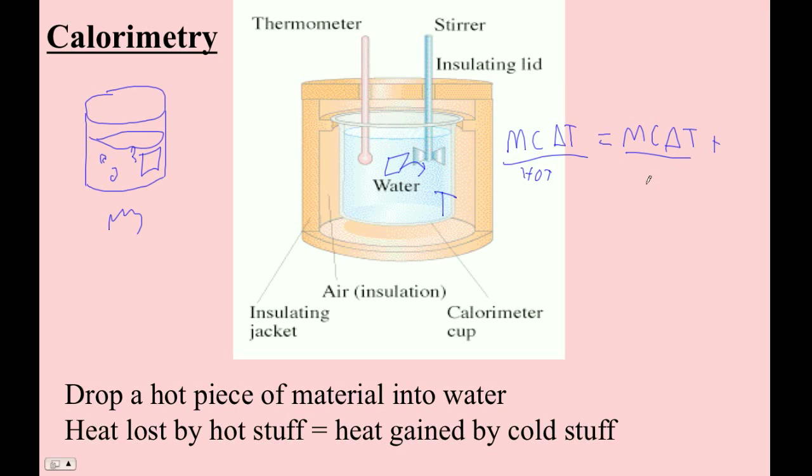So it would really be MCAT and then MCAT for the beaker. And then if you want to be really careful, the thermometer would also absorb some of the heat and maybe even the stirring rod. So sometimes there's several MCATs on this side. Let me do an example, a simple example where there's just one thing. Heat goes from one thing to another.